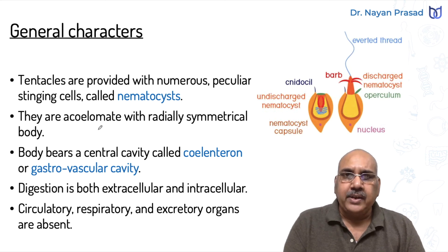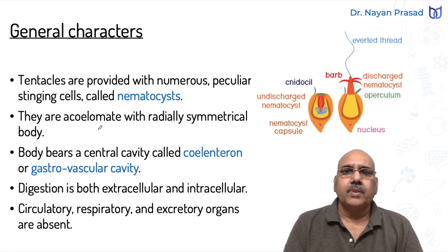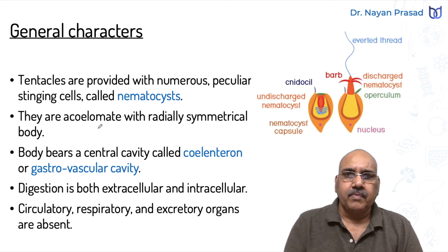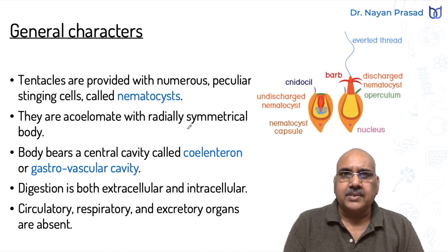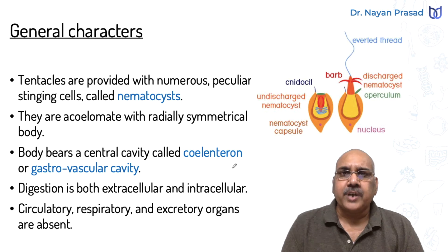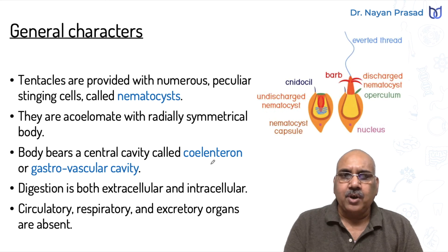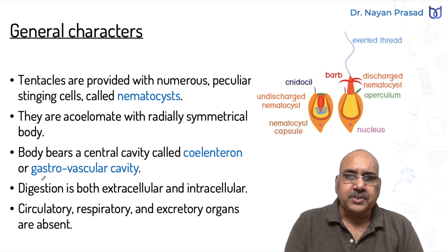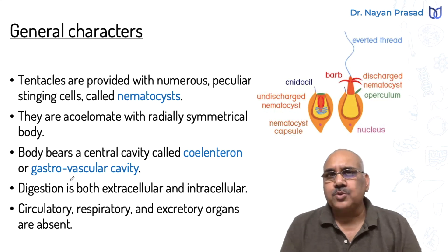Members of this phylum are acoelomate, meaning they have no body cavity. The body has radial symmetry, with certain parts arranged around a central axis. The body bears a central cavity called the coelenteron — referring to the hollow intestine-like body. Digestion takes place in this cavity, so it is also called the gastrovascular cavity.